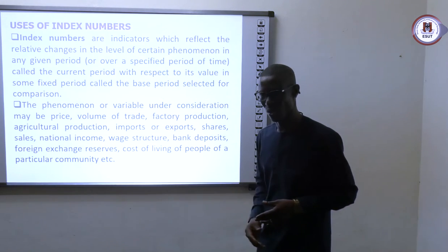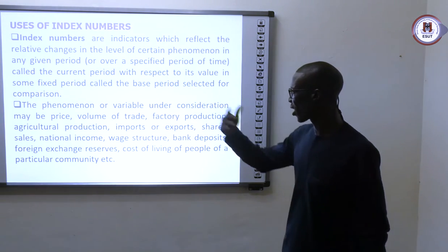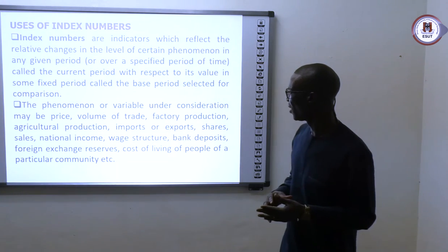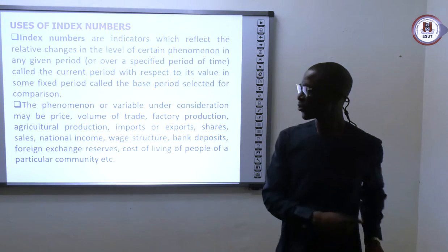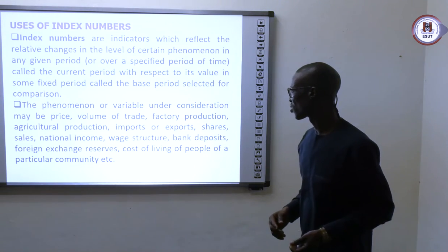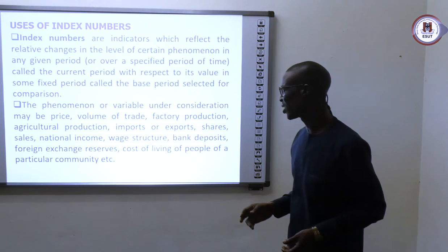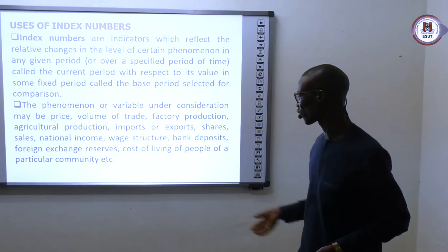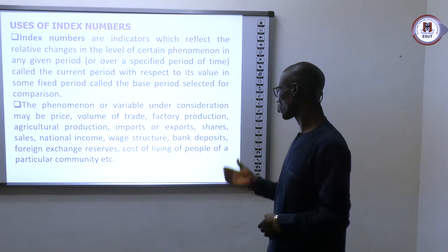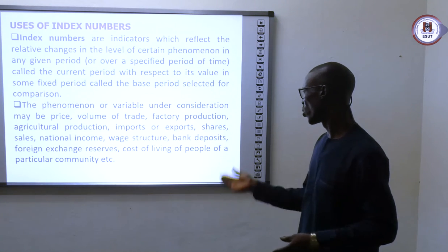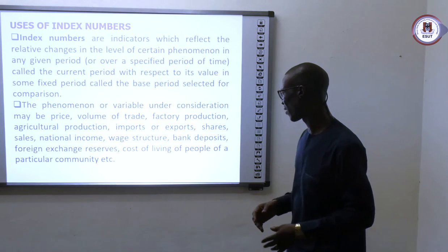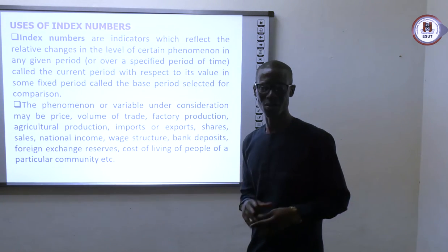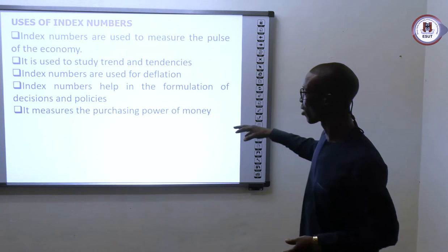The current period is examined relative to the base period. The phenomena or variables under consideration here are normally prices, the volume of trade, factors of production, agricultural production, import, export, shares of sales, national incomes, wealth construction, bank deposits, foreign exchange reserves, cost of living of people, and so on and so forth. These are some phenomena we normally check when we talk of index numbers.